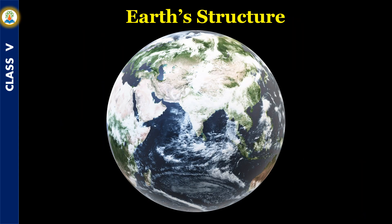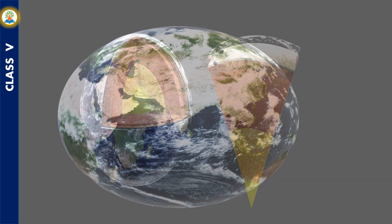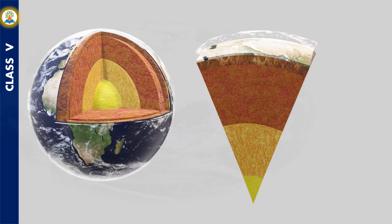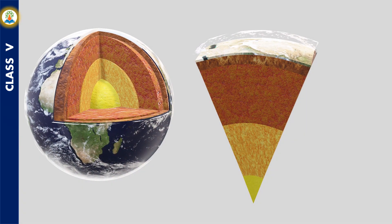The Earth is spherical in shape. It is made up of three layers: crust, mantle and core.